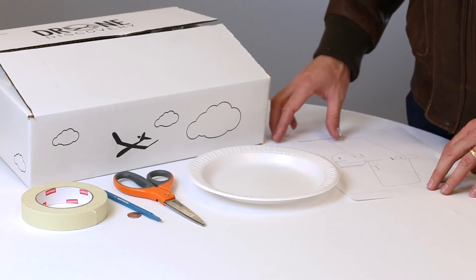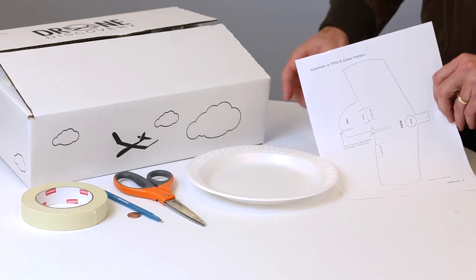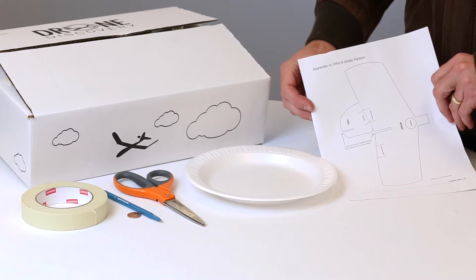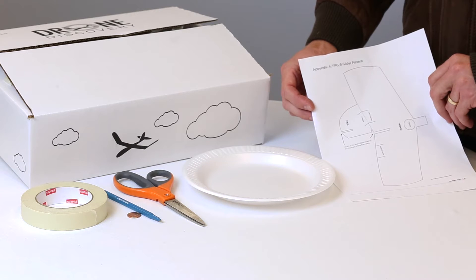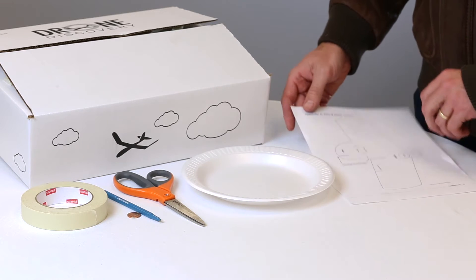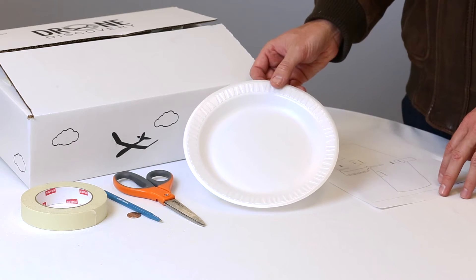Now that you've learned how to fly the prop copter, it's time to construct your FPG9 foam plate glider. And I'm going to teach you how to turn this into this. From your kit, you'll first need to make copies of Appendix A, which is the FPG9 glider pattern. Make several copies for all members of your team. You'll also take a foam paper plate from your kit.